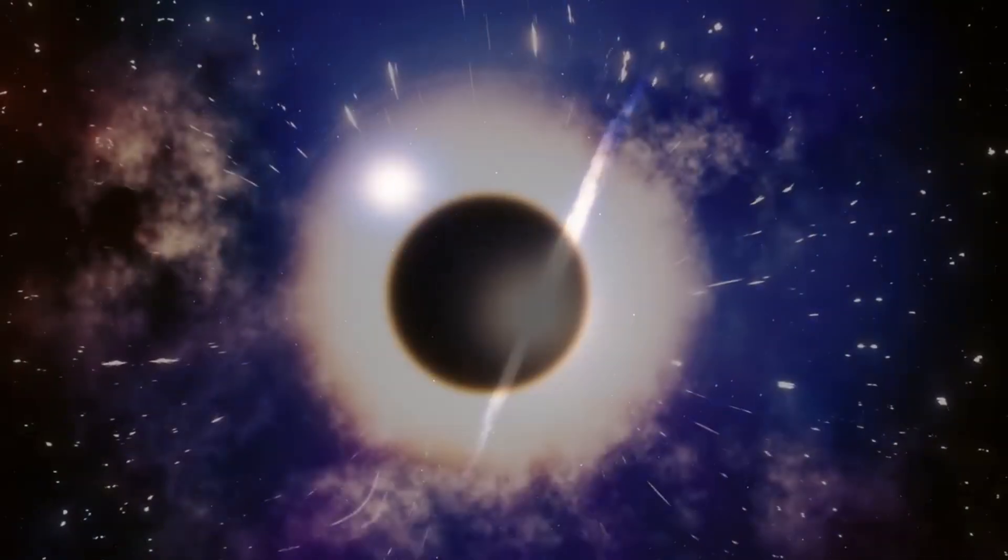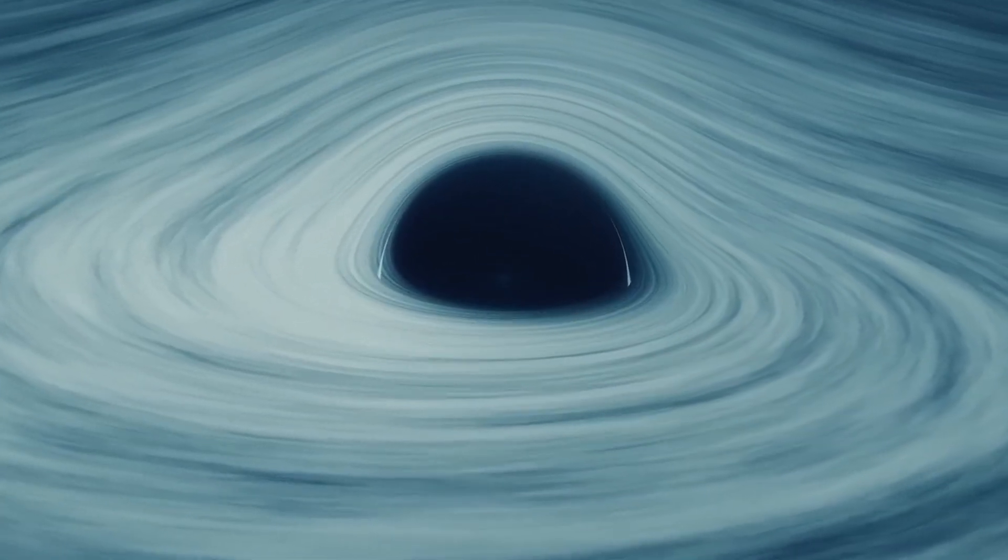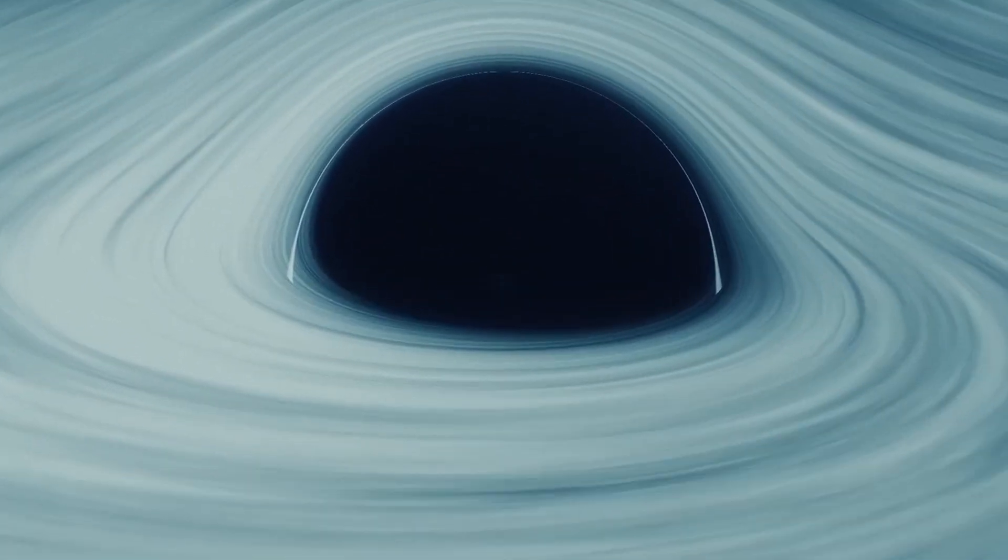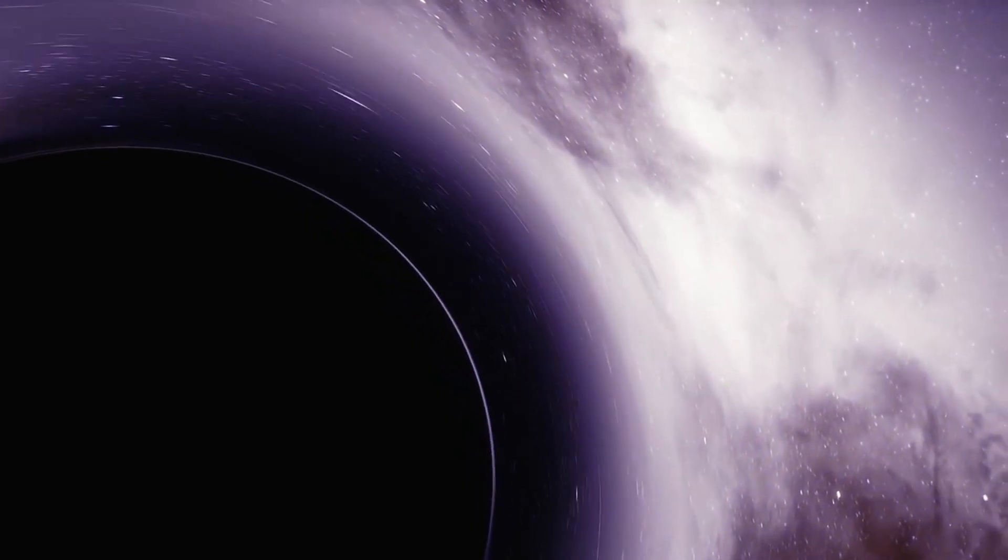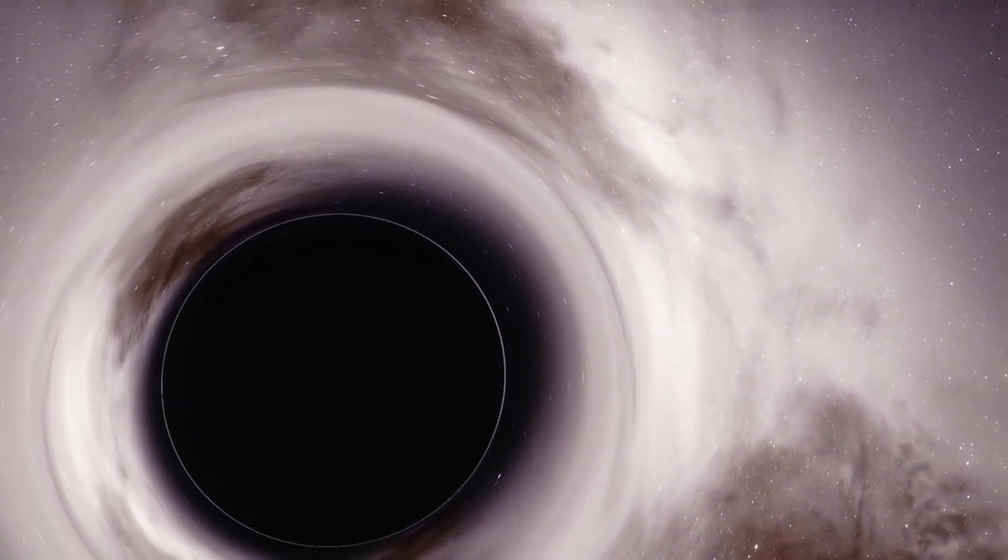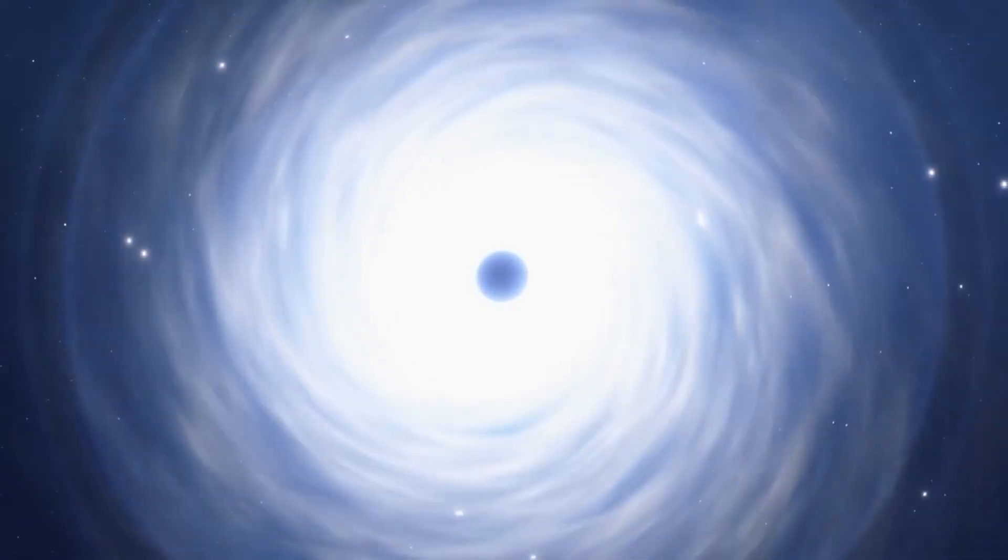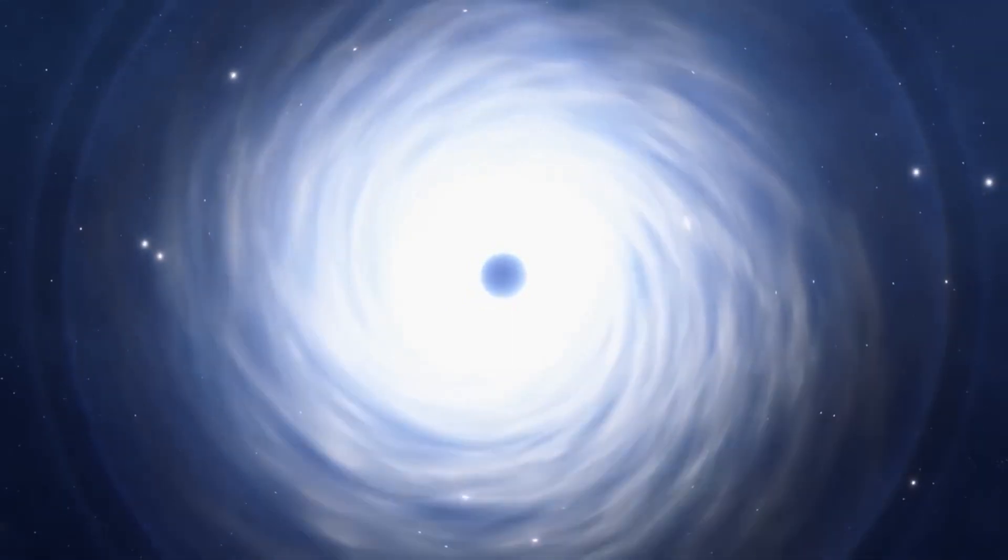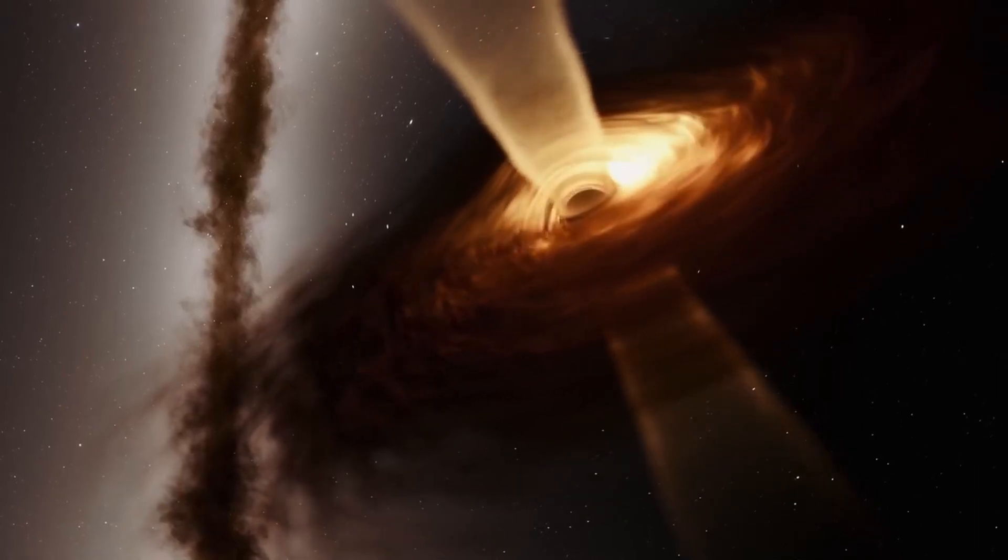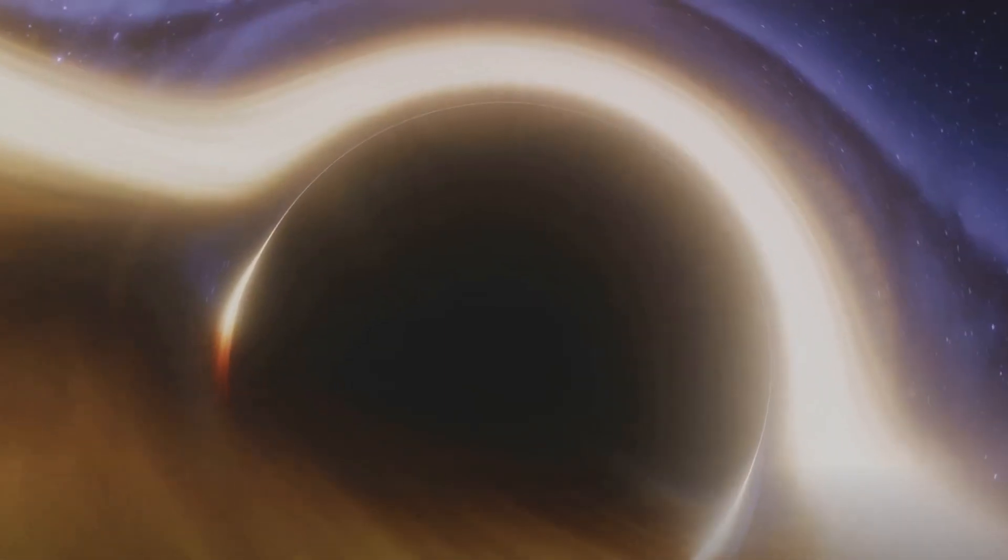If information is stored on the event horizon of a black hole, then it's not destroyed when something falls in. Instead, it's transformed and stored in a different way. Could the solution to the information paradox lie in viewing our universe as a 2D hologram? It's a mind-bending thought. As we delve deeper into the mysteries of black holes, we're not just learning about these cosmic phenomena, we're also challenging our understanding of reality itself. Yet, there's another twist to this tale,